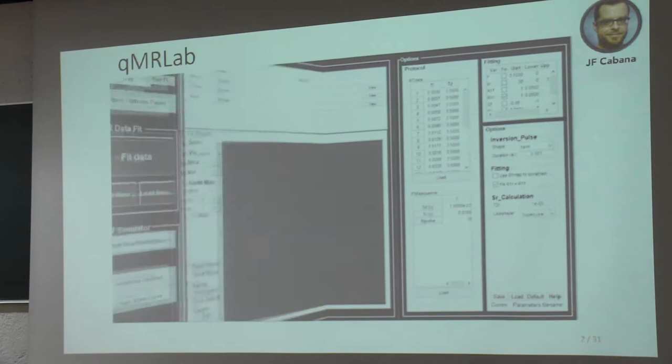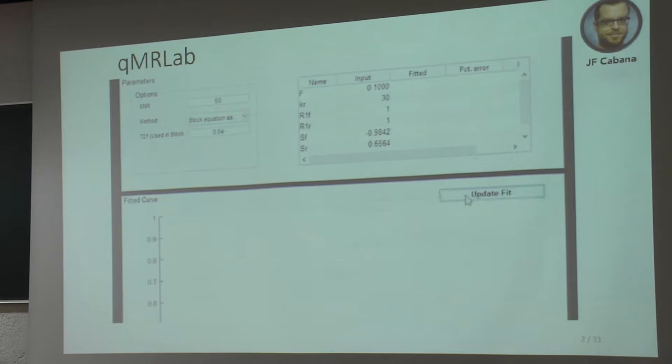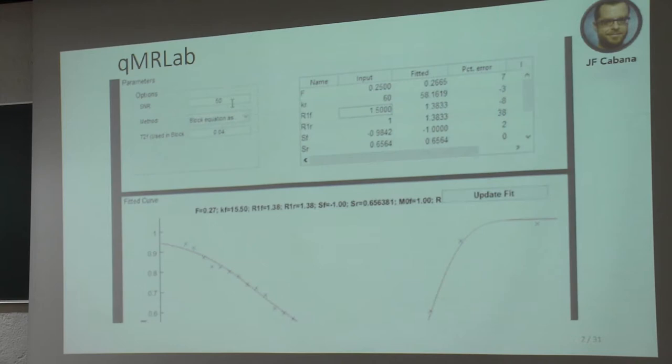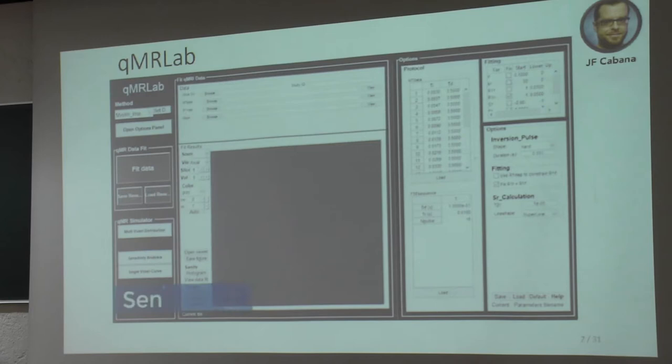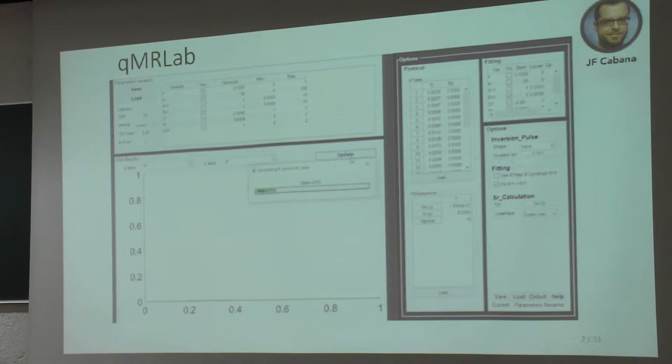QMRLab also includes a data simulator with three modes of simulation. First, the single voxel simulation allows you to generate synthetic QMR signal on a known ground truth and assess how different acquisition or fitting parameters affect the fitted values. You can control your model input values and see the difference between input and output. Second, there is a sensitivity analysis simulation mode, where you can systematically vary one input model parameter at a time and observe how the fitted model responds. Results are conveniently displayed directly inside QMRLab.